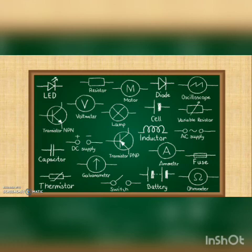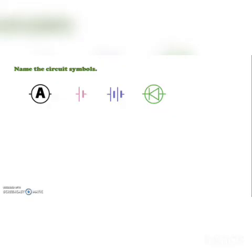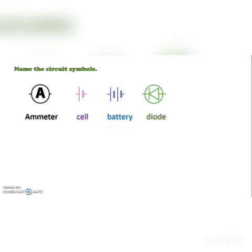These are the signs for different components in circuits. Name the circuit symbols: that is ammeter, that is a cell, that is a battery, and that is a diode.